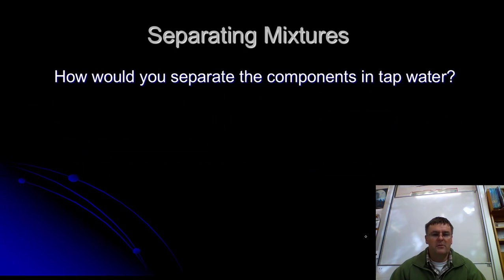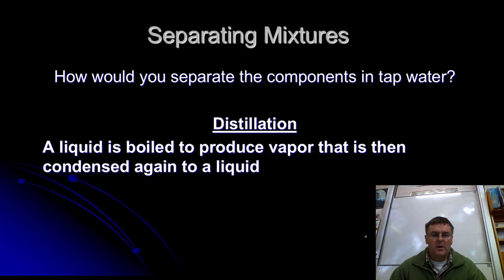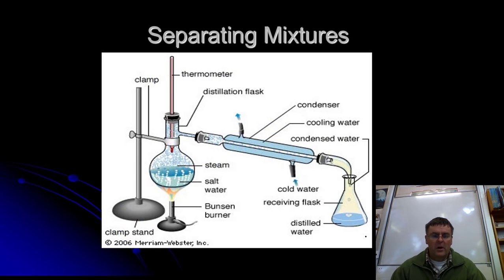Okay. So we separate the things. Tap water. How are we going to do that? Distillation. What on earth is distillation? So we boil a liquid. We turn it into a gas and then we turn it back into a liquid again. That's distillation. Often we use this when we're separating two different liquids. Usually with different boiling points. So here we go.